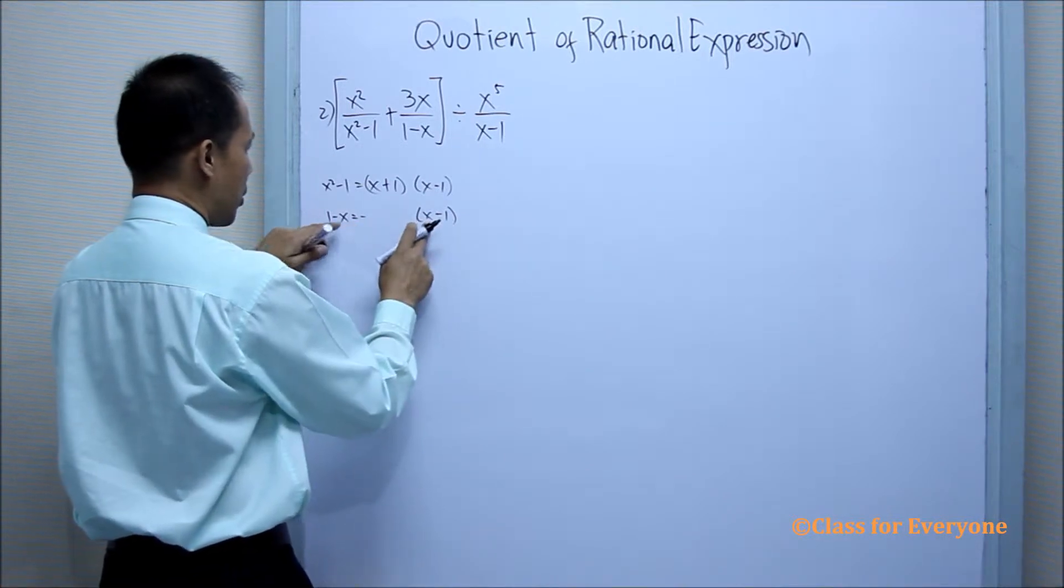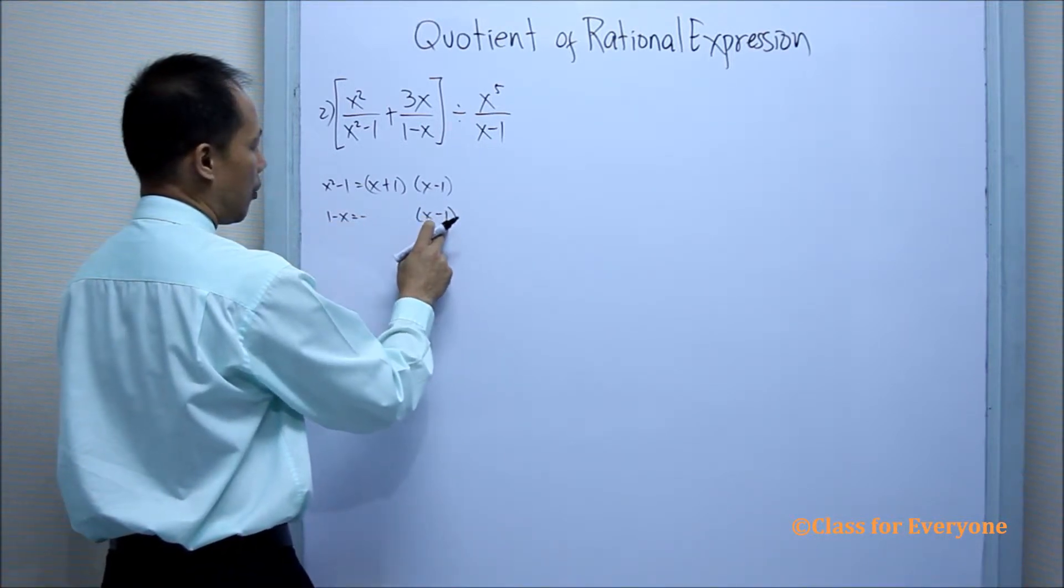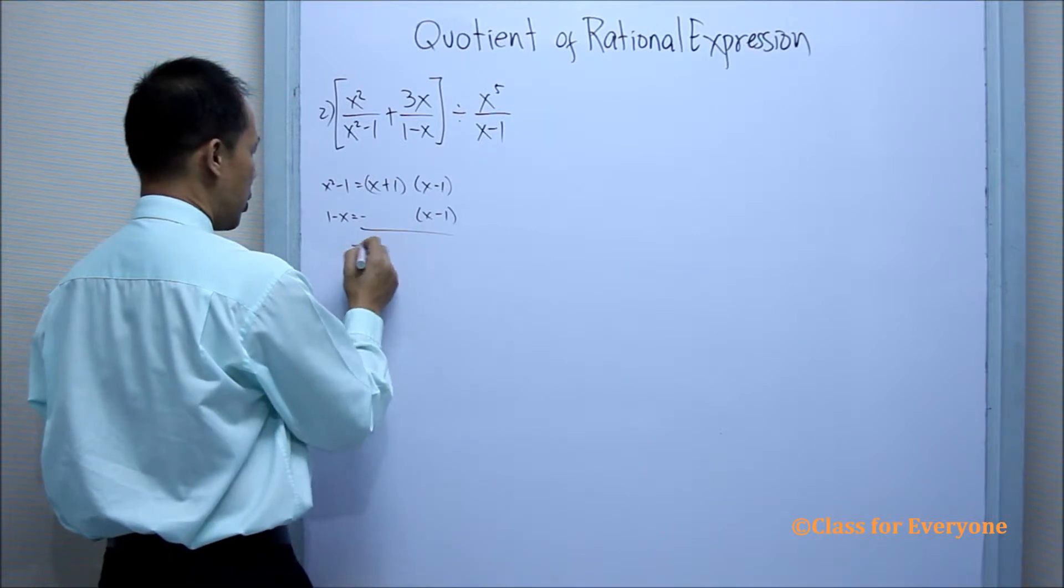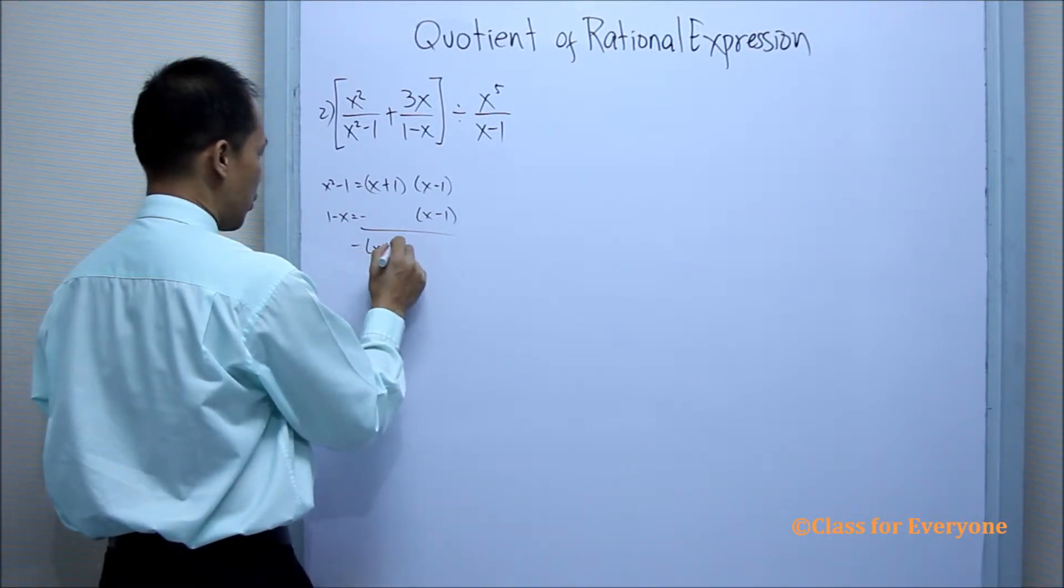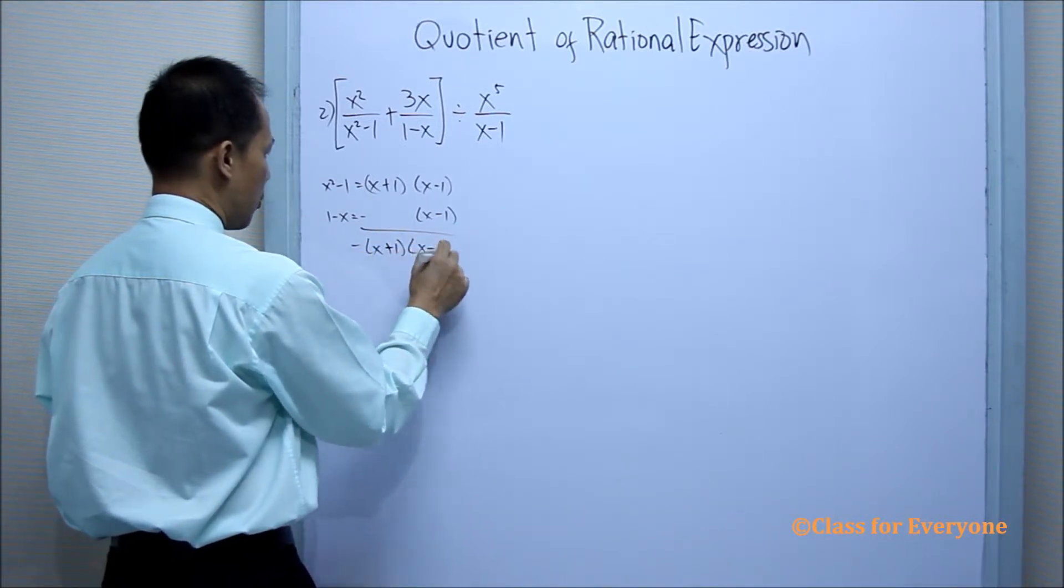Because negative times x is negative x, negative times negative 1 is positive 1. Therefore, the LCD is negative x plus 1, x minus 1.